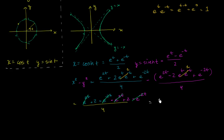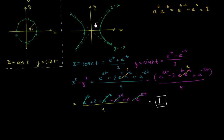So this is a pretty good reason to call these hyperbolic trig functions. The circular trig functions — you give any t in the parameterization and you end up on the unit circle; vary t and you trace out the unit circle. Here, for any real t, you end up on the unit hyperbola. In particular, you end up on the right side of the unit hyperbola.